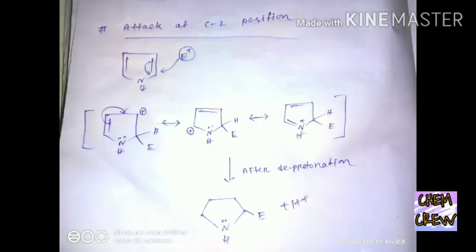The C2 position of the pyrrole ring for electrophilic attack is more preferable than the C3 position. Why? You can see there, if an electrophile attacks the C2 position, then in the transition state there are three resonating structures.